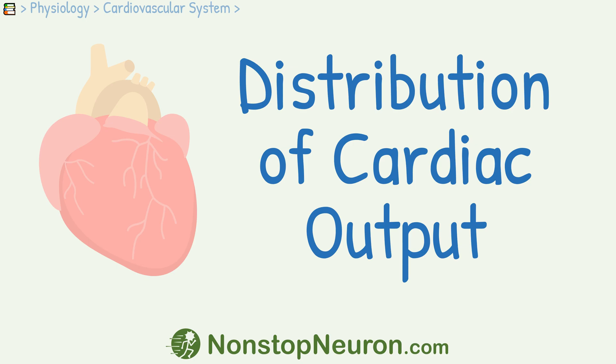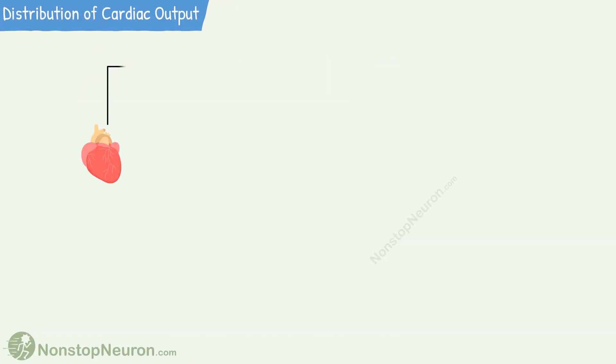In this video, we will see the distribution of cardiac output. The heart pumps about 5 liters of blood into the systemic circulation every minute.